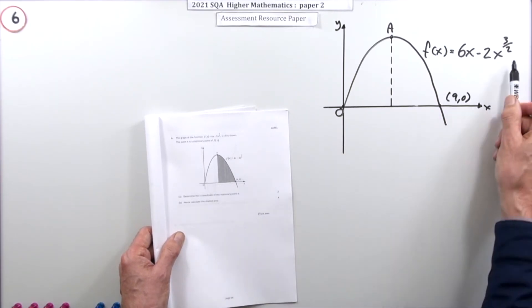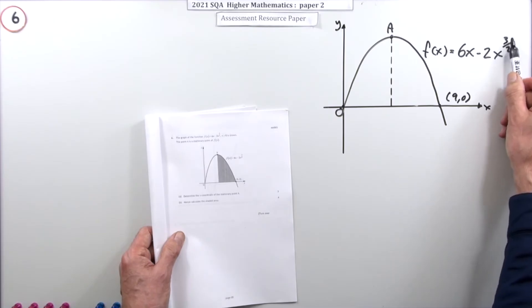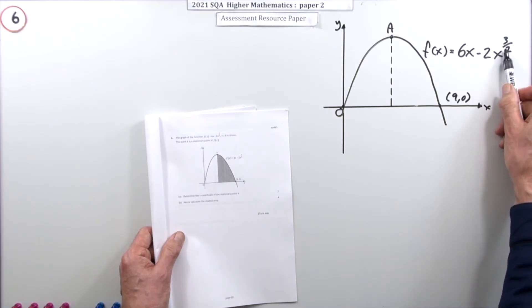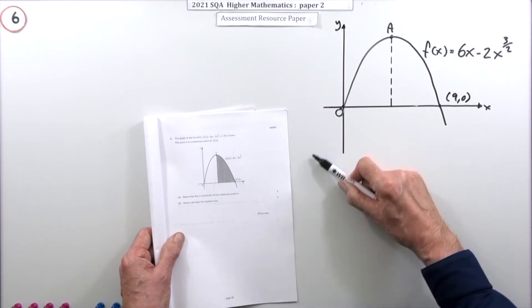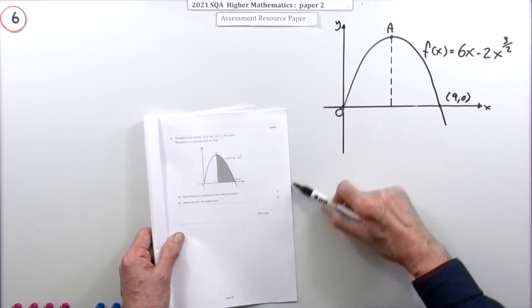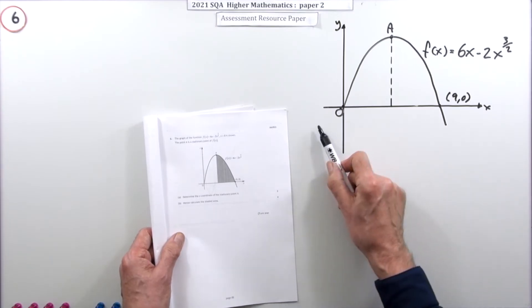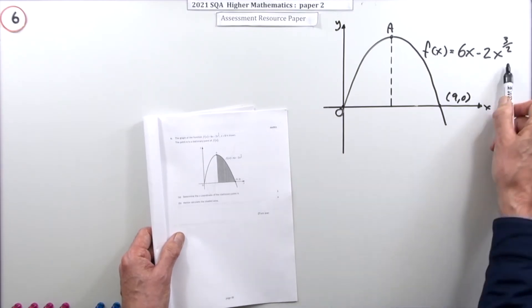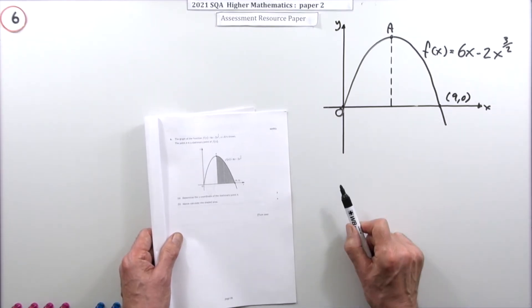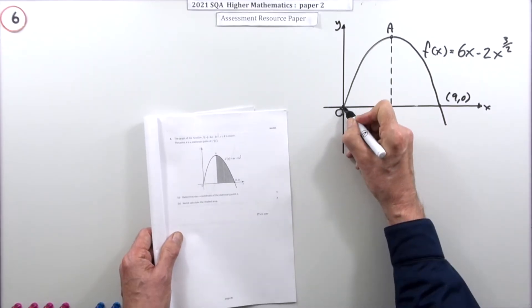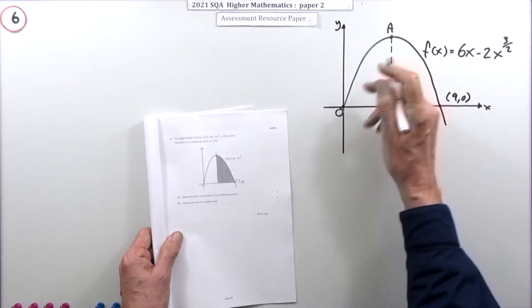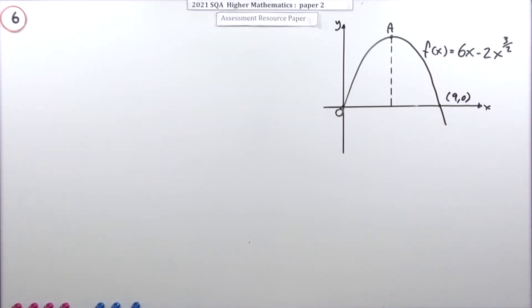One thing to notice is that the function has a power of 3/2 — that's the index — so there's a square root in there. This means there's no part of the graph for negative x values, because you can't put a negative into that formula. That's why it starts at the origin and then goes on.